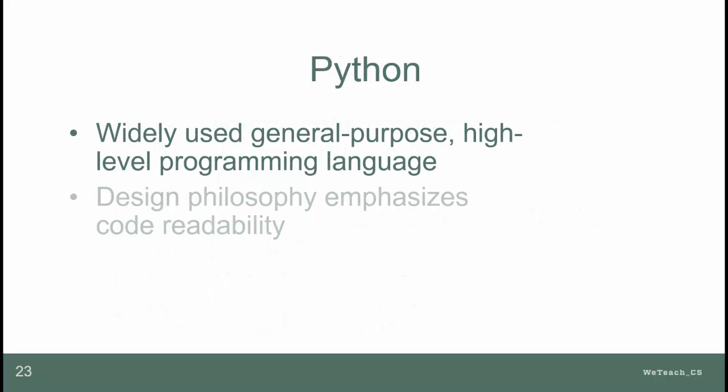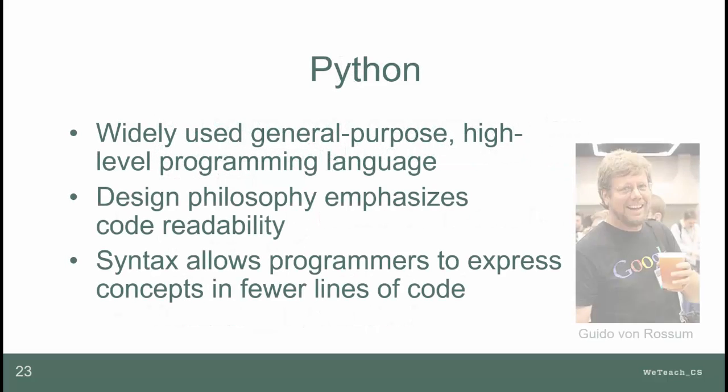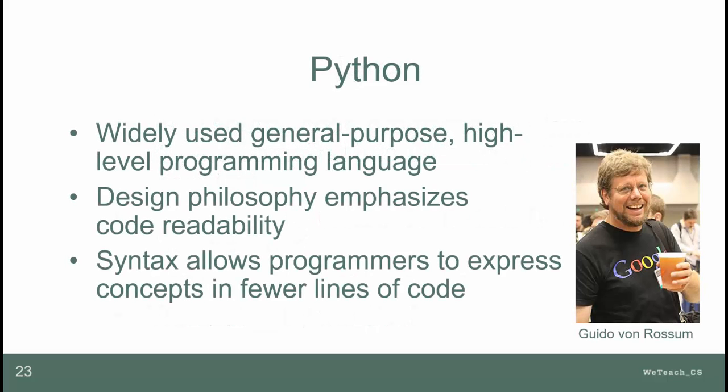The Python language was named in honor of Monty Python's Flying Circus, a favorite British TV show of author Guido von Rossum of the Netherlands, and supports several paradigms, including procedural, functional, and object-oriented.